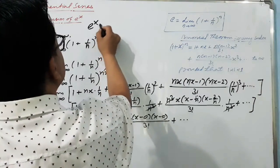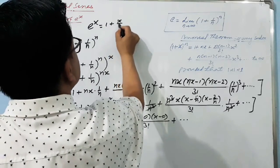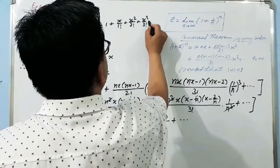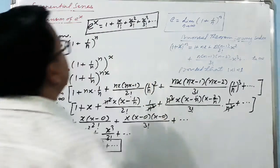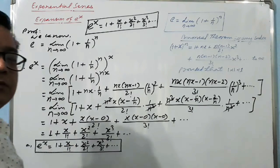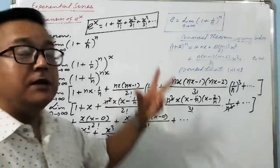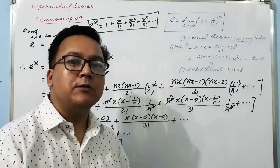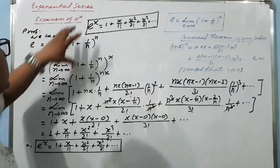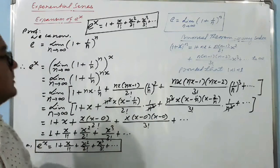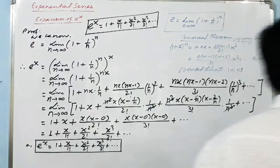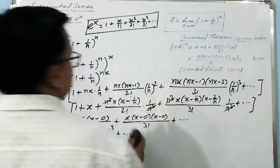So we have derived that e raised to power x is equal to 1 plus x/1! plus x²/2! plus x³/3! plus dot dot dot — and this is the expansion of e raised to power x. To derive this, you only need two things: the definition of e, and the binomial theorem for any index.